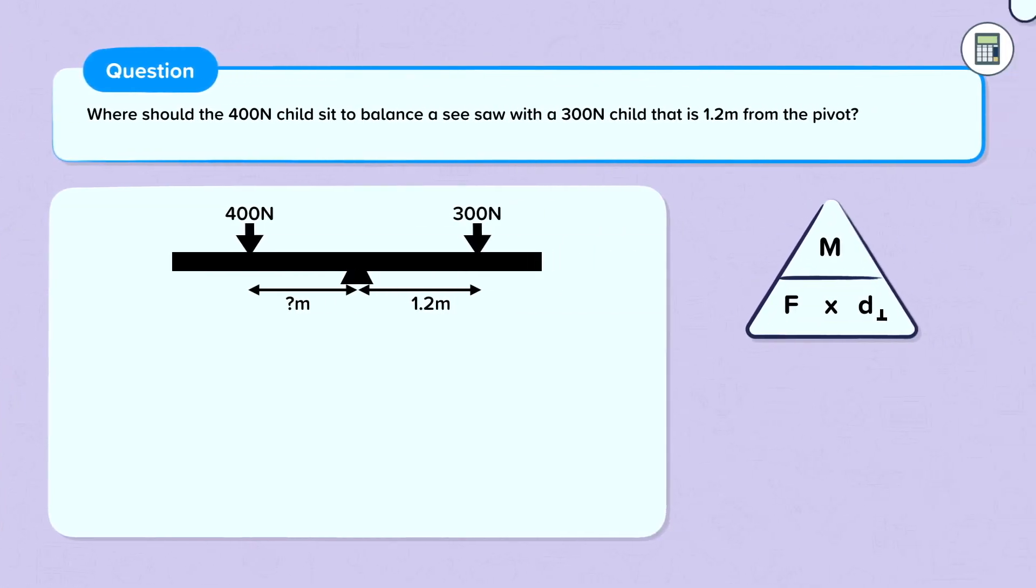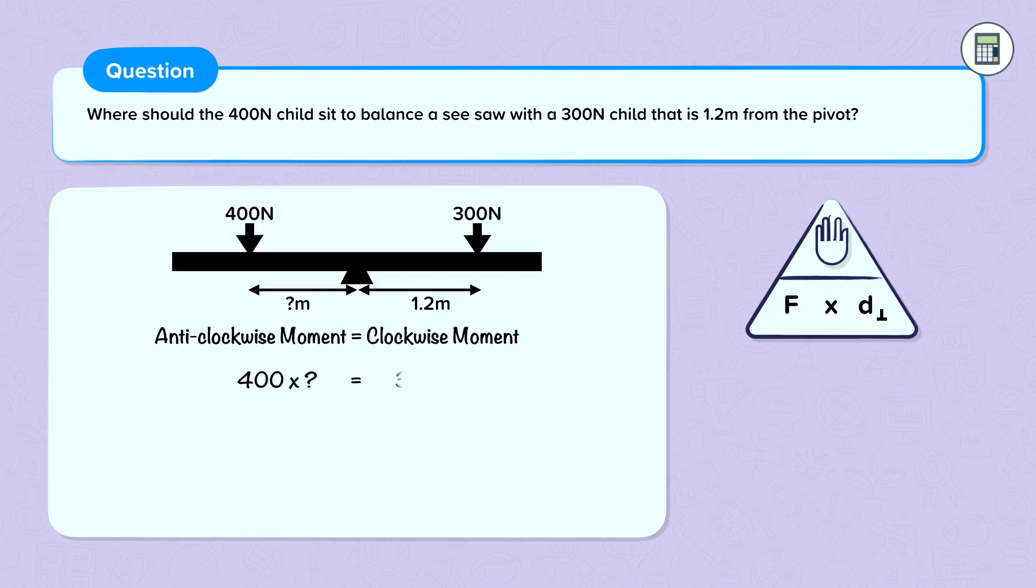We can also use moments to balance things. Let's try answering this question. Where should a 400 newton child sit to balance a seesaw with a 300 newton child that is 1.2 meters from the pivot?